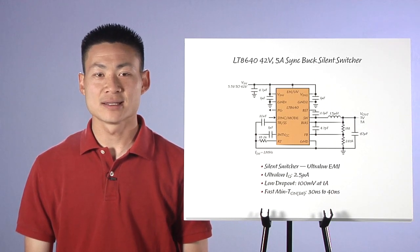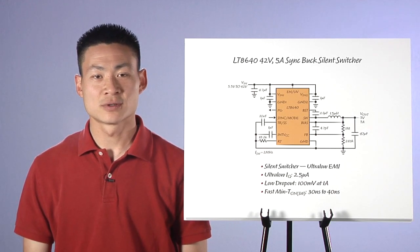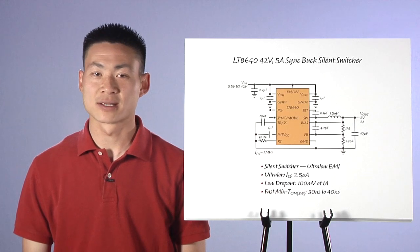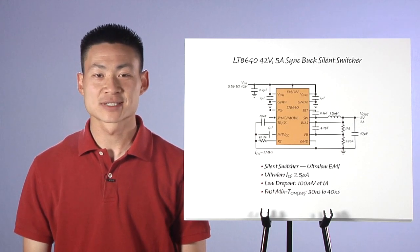Today we're discussing the LT8640, a 42 volt 5 amp synchronous step-down regulator that features our new silent switcher architecture.